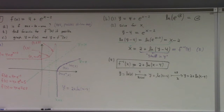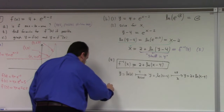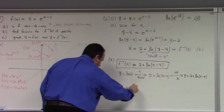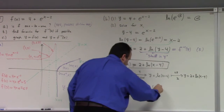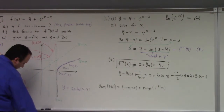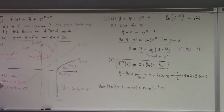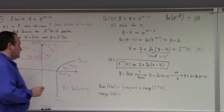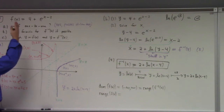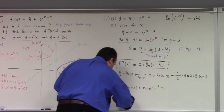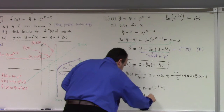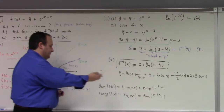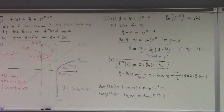We could also talk about domain and range. The domain of f is negative infinity to positive infinity. And the range of f inverse is the same — it goes all the way down and all the way up. The range of f is 4 not included to infinity, since it never gets to 4. Notice that's also the domain of the inverse function — we always see this mirroring of domain and range for a function and its inverse.